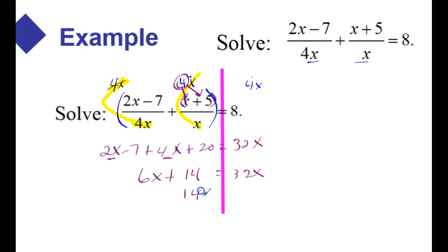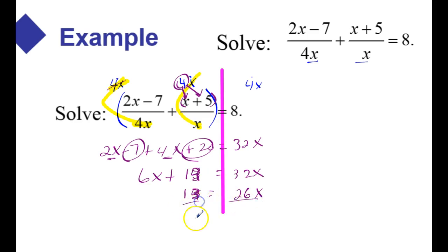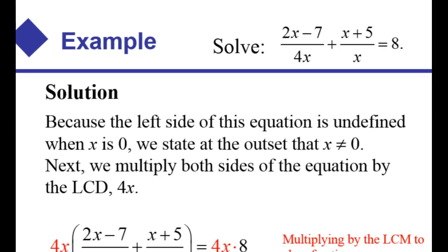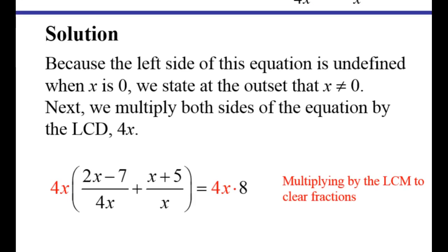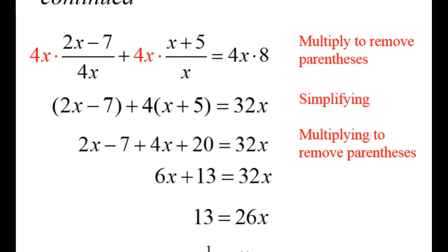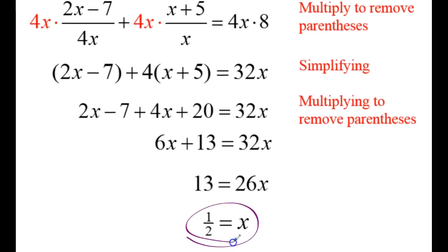I'm going to get all the x's on the same side. If I subtract off 6x, I get 26x. Let me check my math — negative 7 plus 20 gives 13. Then if I divide through by 26 on both sides, I'll get x equals 1 half. You always want to check to make sure that the answer doesn't cause the denominator to divide by 0. I think 1 half will work. Here's how the author worked through the problem, and it looks like the author got the same solution, 1 half.